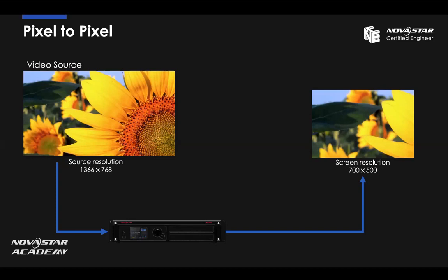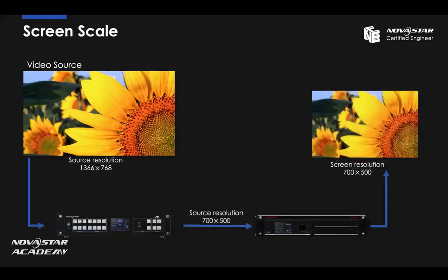If you want to display all the content on the screen, a video processor or software scaling is necessary, which can scale the image resolution to the specific resolution needed. After scaling through the video processor, the image fits your screen size and you get a complete display of the entire image. Depending on the screen size, the ratio of the image may be changed. So we add an extra video processor to scale the resolution from the video source — for example, scaling to 700 by 500 so the whole image fits the screen.